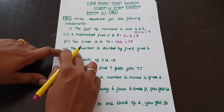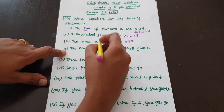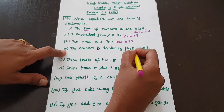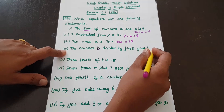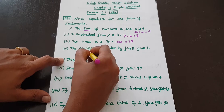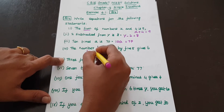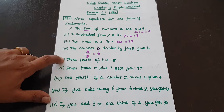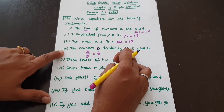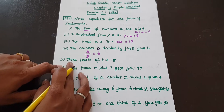Next: the number b divided by 5 gives 6. So b divided by 5 is equal to 6, meaning b by 5 equals 6.